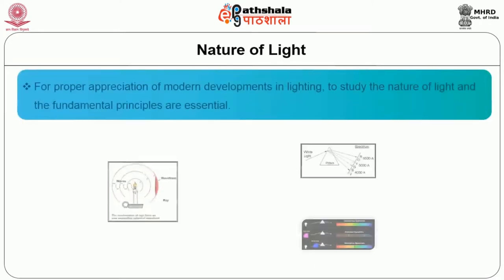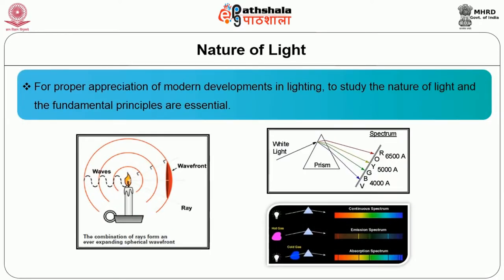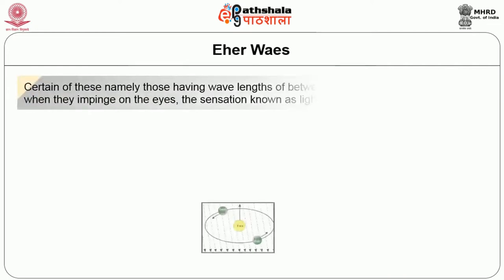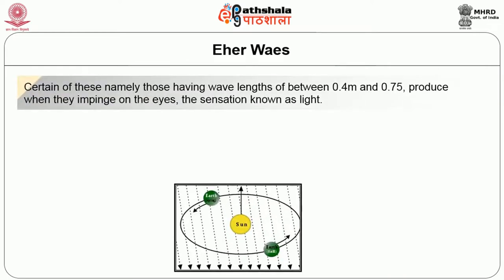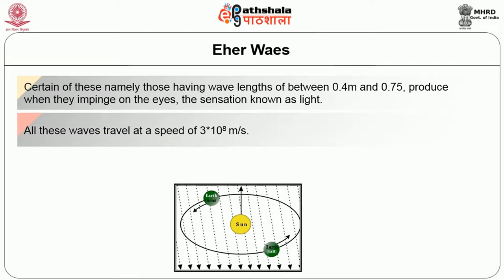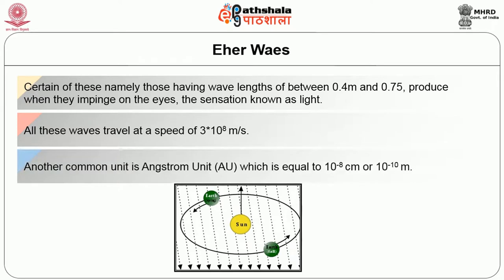Nature of light: for proper appreciation of modern developments in lighting, it is essential to study the nature of light and its fundamental principles. Certain electromagnetic waves having wavelengths of between 0.4 and 0.75 micrometers, when they impinge on the eyes, produce the sensation known as light. All these waves travel at the speed of 3×10⁸ meters per second. Another common unit is the Angstrom unit, which is equal to 10⁻⁸ centimeter or 10⁻¹⁰ meter.